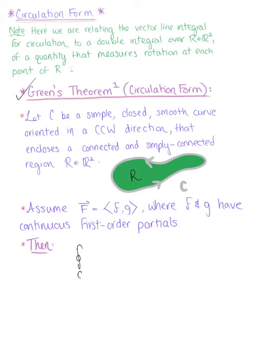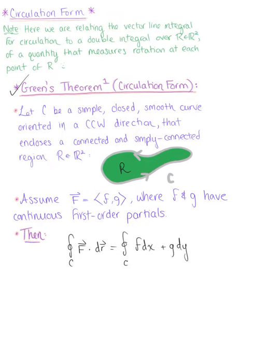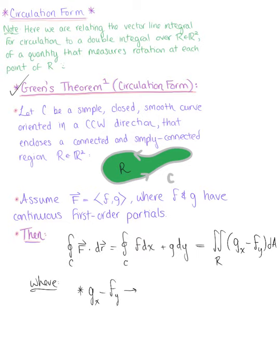We have the circulation integral from vector line integrals: the closed curve integral of the vector field F dotted with the differential dR. An alternative form for our circulation is the integral over the closed curve C of F dx plus G dy. Green's theorem tells us this is equivalent to the double integral over the region R of the partial derivative of G with respect to x minus the partial derivative of F with respect to y, dA.